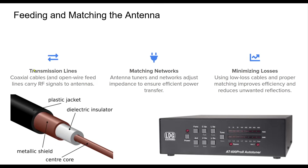Efficient antenna performance depends on proper feeding and impedance matching. Transmission lines, such as coaxial cables and open wire feed lines, carry RF signals between the radio and antenna. However, impedance mismatches can lead to power loss, high SWR, and reduced efficiency. Matching networks, such as antenna tuners and baluns, adjust the impedance to maximize power transfer and protect equipment. Choosing the right transmission line and minimizing losses are critical for maintaining signal integrity and system efficiency.